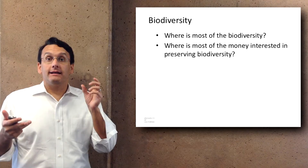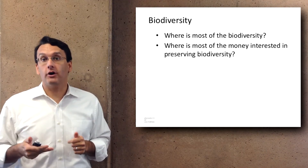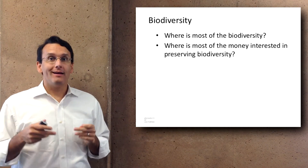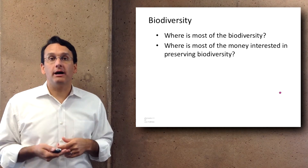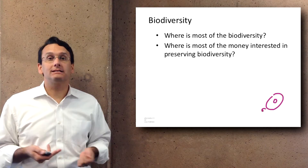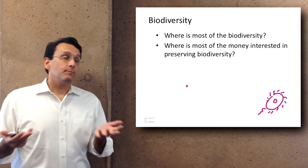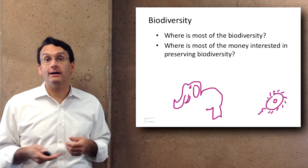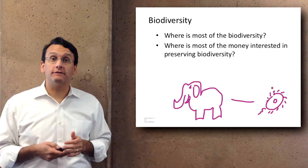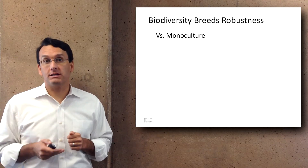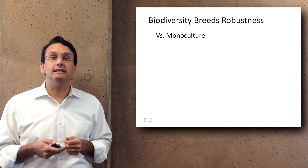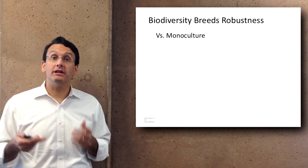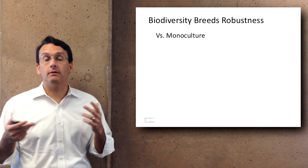Most of the biodiversity is not in what are called charismatic megafauna — big animals like whales, dolphins, and tigers that people like to think about and that most conservation money goes toward. A huge amount of biodiversity exists in bacteria and other microorganisms, and it's an open question whether preserving that biodiversity is as relevant as preserving things more like us. Ultimately, biodiversity breeds robustness — if you have a system with lots of different species, the chances that all go extinct simultaneously are much smaller than in a monoculture.